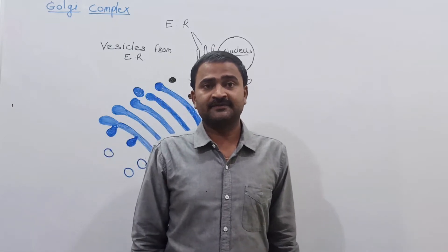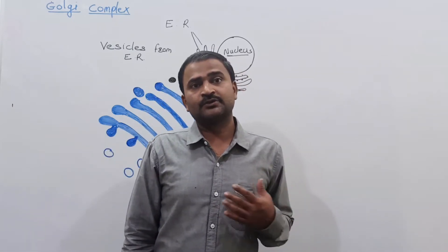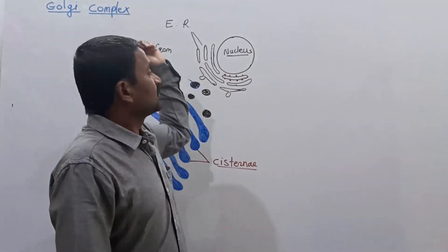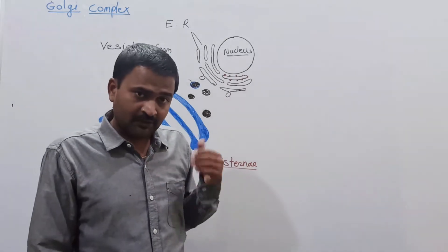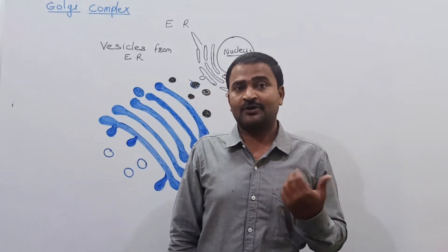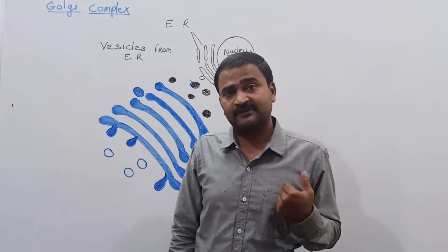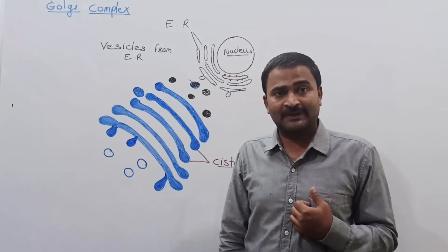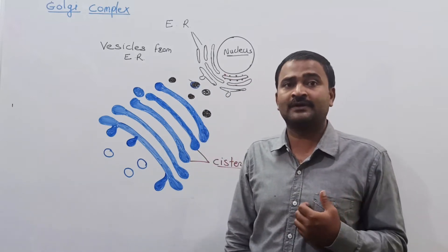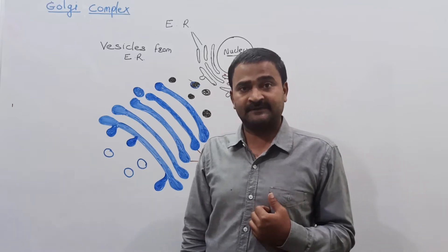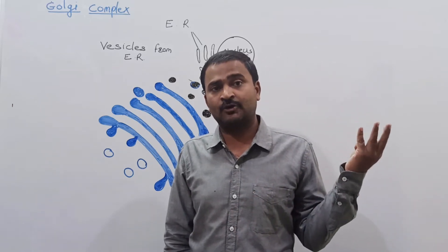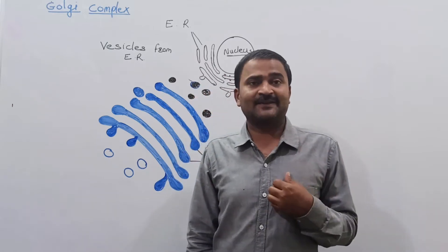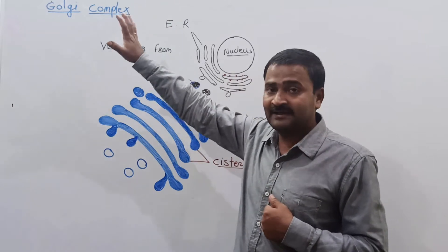Good morning students. Today we are going to discuss the next component of the endomembrane system. This component is the Golgi complex, also called the Golgi body or Golgi apparatus. The Golgi complex is the cell organelle involved in the endomembrane system, which includes the endoplasmic reticulum, Golgi complex, lysosomes, and vacuoles.